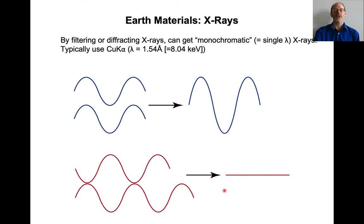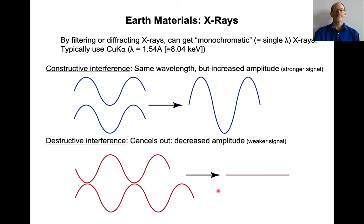So they cancel each other out. Constructive interference: same wavelength, increased amplitude. Destructive interference cancels out — decreased amplitude.